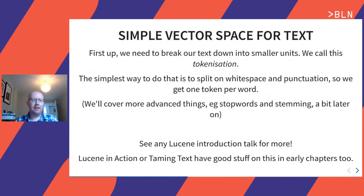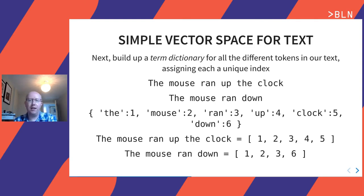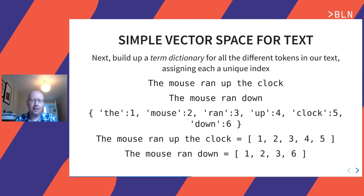So we need to take our text and get it into numbers. The first thing we need to do — and those of you who know Lucene will understand this — is tokenization. The easiest thing is to split on whitespace and punctuation, one token per word. Ideally you'll be doing stop words and stemming and all those kinds of things, but we'll skip over that for now. The first thing we're going to do is build up a term dictionary. So if we have the text 'the mouse ran up the clock', we assign indexes: 'the' is position one, 'mouse' position two, 'ran' position three, 'up' four, 'clock' five, 'down' six. For a second document, 'the mouse ran down', a lot of those words are in common so we reuse the same terms.